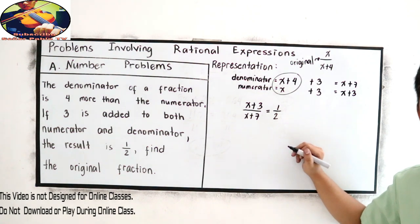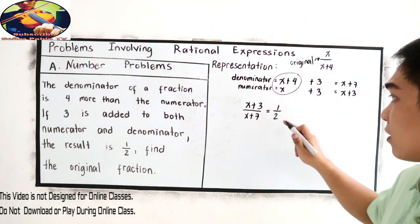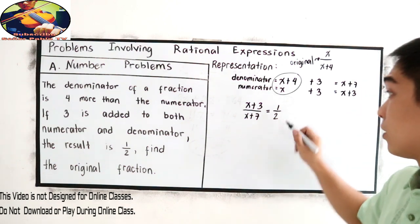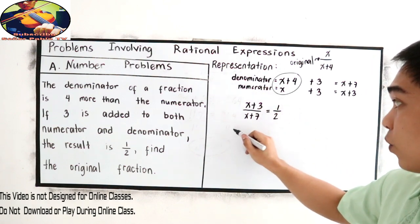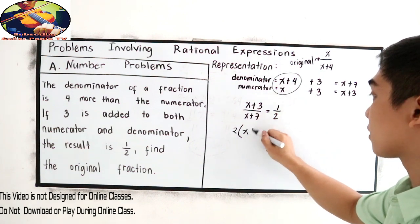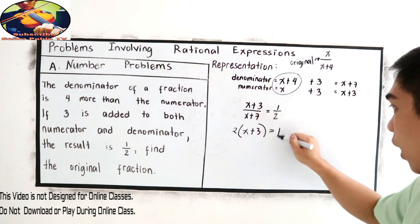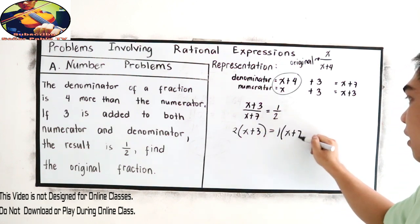So let us solve for x. The easiest way is to cross multiply. So I am going to multiply two to the left side of the equation. So two times x plus three is equal to one times x plus seven.